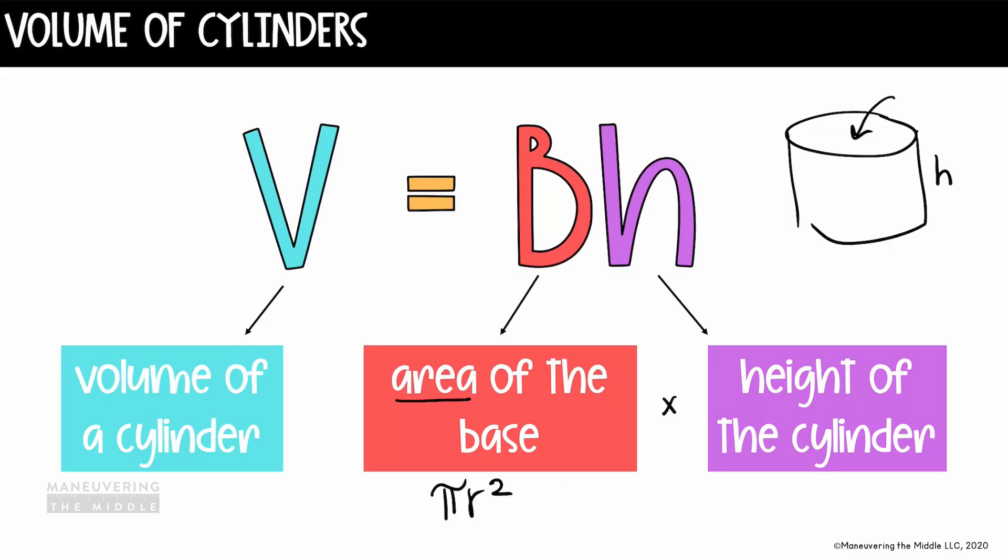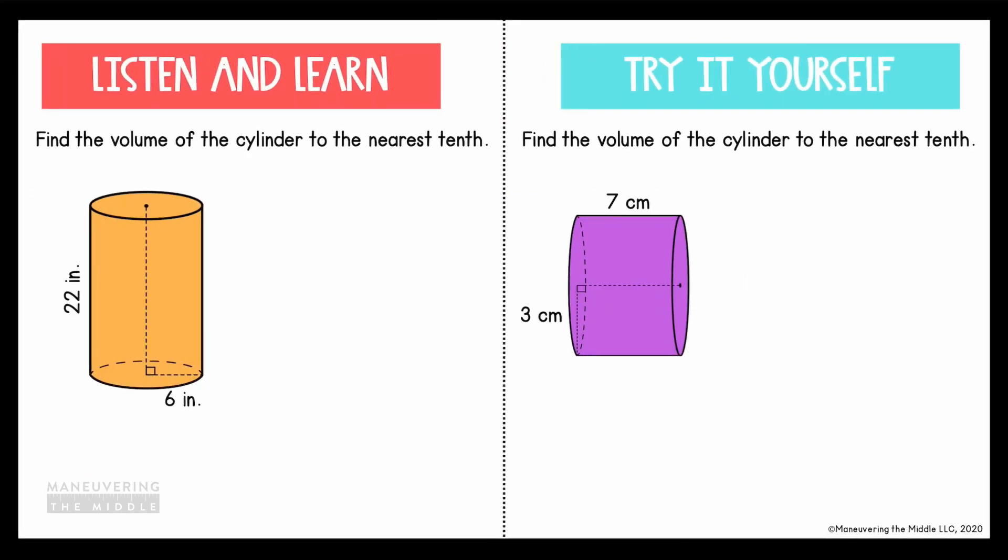So let's try some examples. Find the volume of the cylinder to the nearest tenth. We'll always start by writing out our volume formula, big B, or area of the base times height. And again, if the base of a cylinder is a circle, we find the area of a circle using pi r squared. So what I'll do is I'll rewrite this formula and instead of B, I'm gonna actually put the formula for the area of the base. Then multiply it by the height.